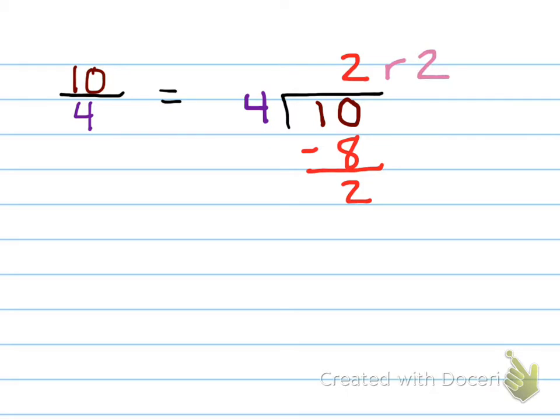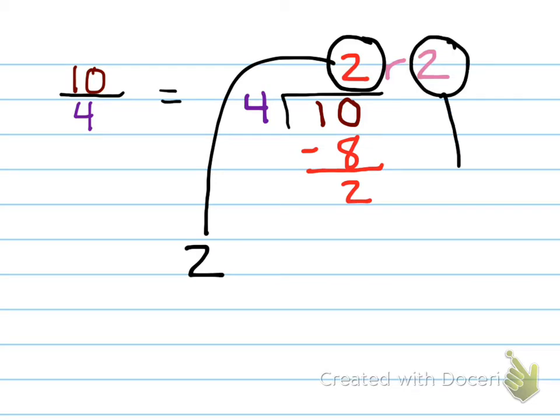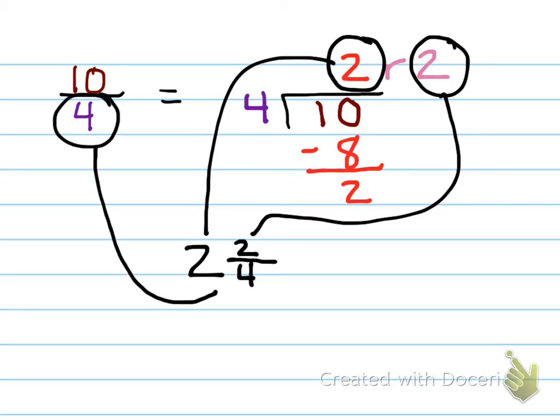Alright, so now the quotient becomes our whole number, the remainder becomes our numerator, and the denominator stays the same. So 10 fourths is equal to 2 and 2 fourths. It's just a different way of representing that amount. One's a mixed number, one's an improper fraction.